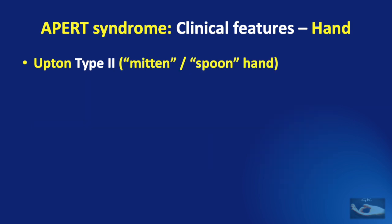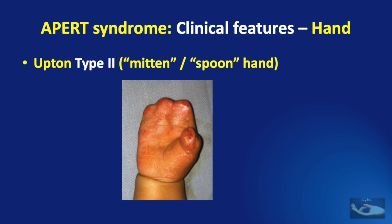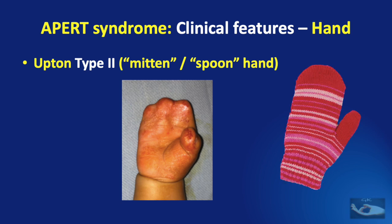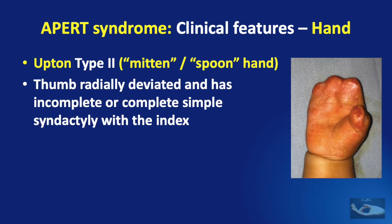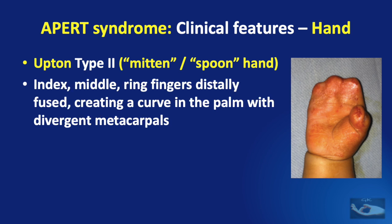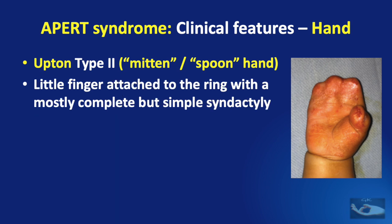In the Type 2 hand, known as a mitten or spoon hand, the thumb is radially deviated again and has an incomplete or complete simple syndactyly with the index finger. The index, middle, and ring fingers are distally fused, creating a curve in the palm with divergent metacarpals. The little finger is attached to the ring with a mostly complete but simple syndactyly.